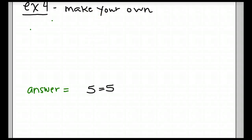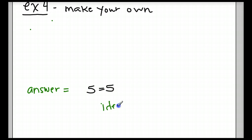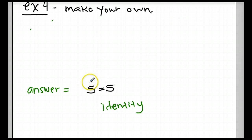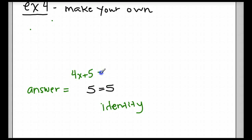Next, we're going to have you come up with your own equation. We're giving you the answer down here — it's 5 equals 5 — so this is an identity, and you are going to come up with the equation. We always want to keep our equation balanced, so whatever we do to one side, we have to do to the other. First, I want to add 4x to both sides. So this side becomes 4x plus 5, and this side becomes 5 plus 4x — the same thing.